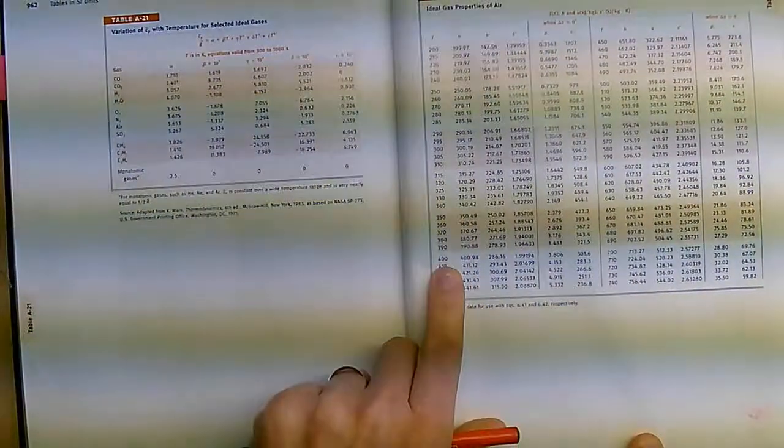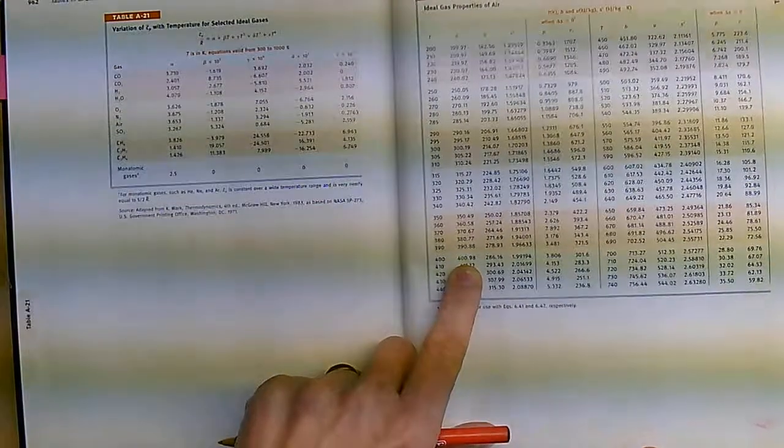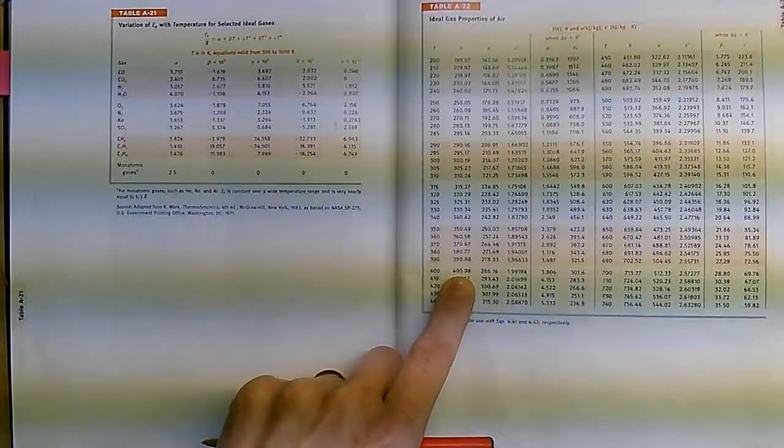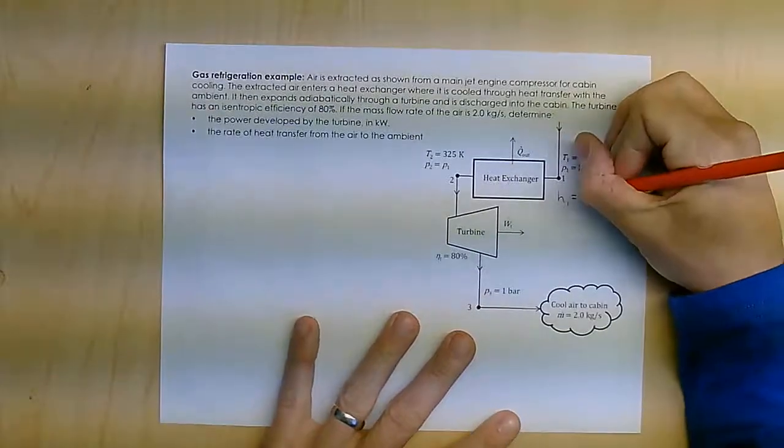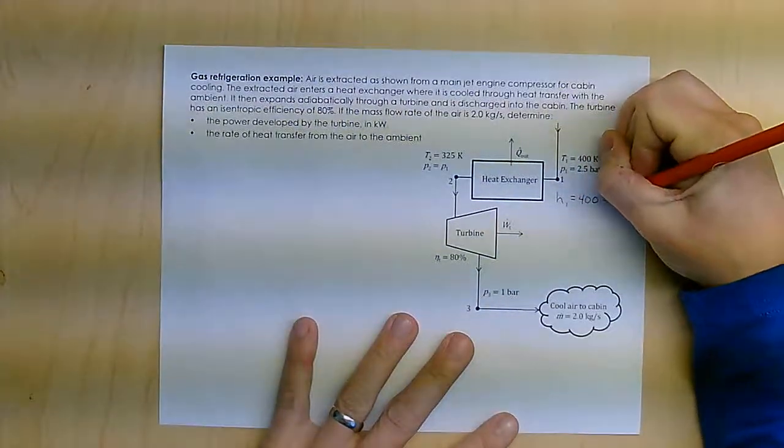You can see that my H value is 400.98. So H is 400.98.